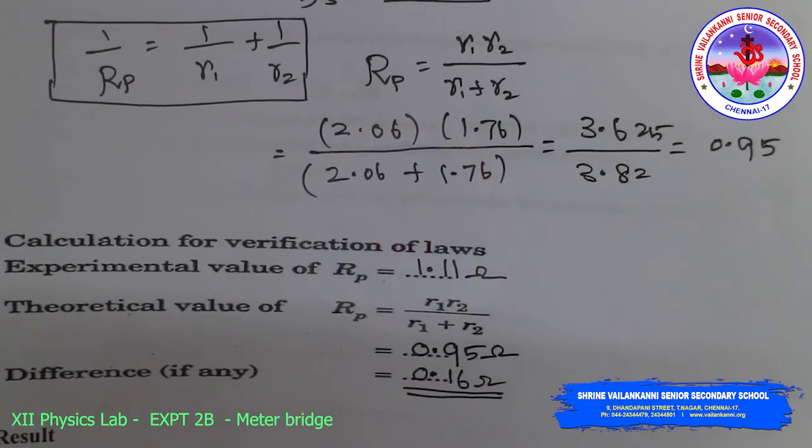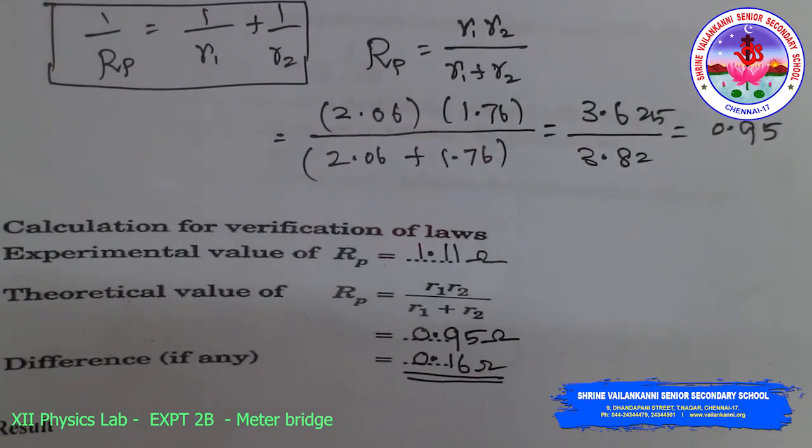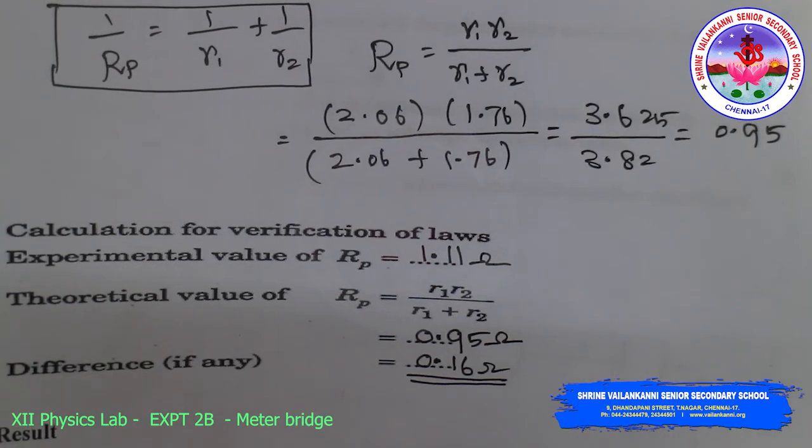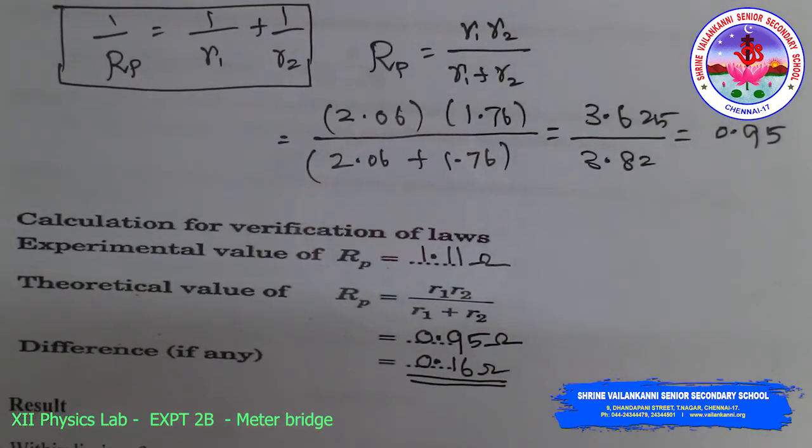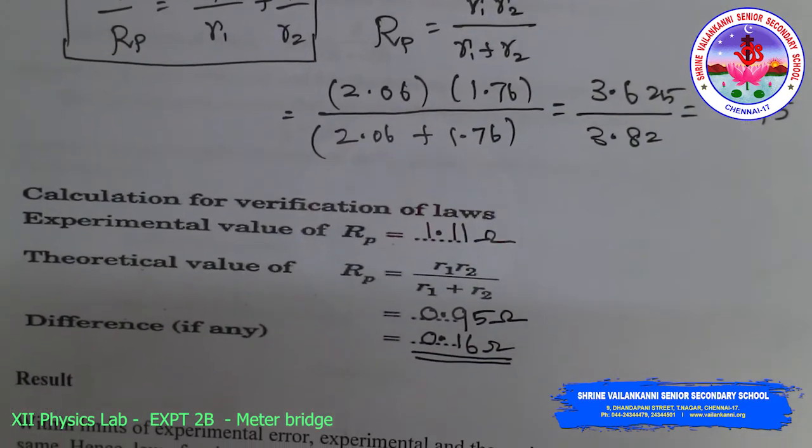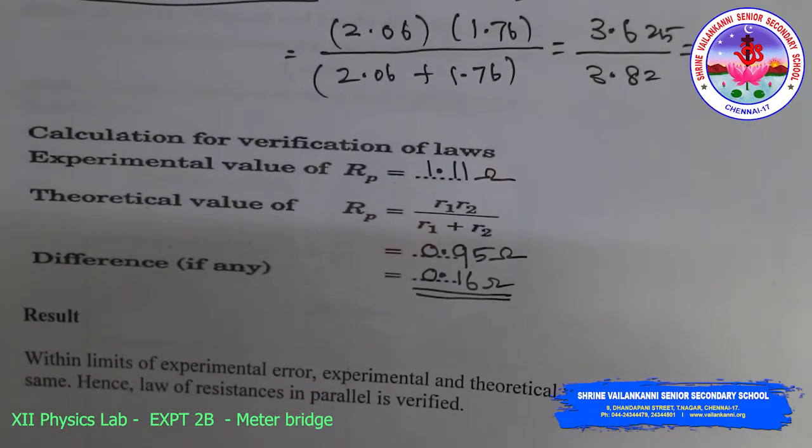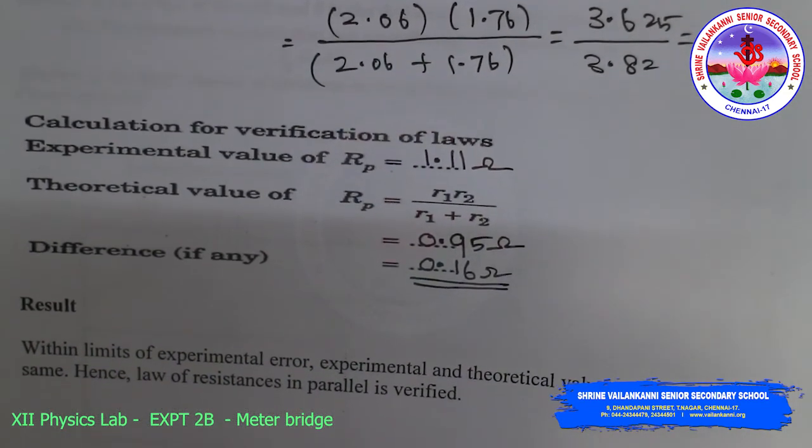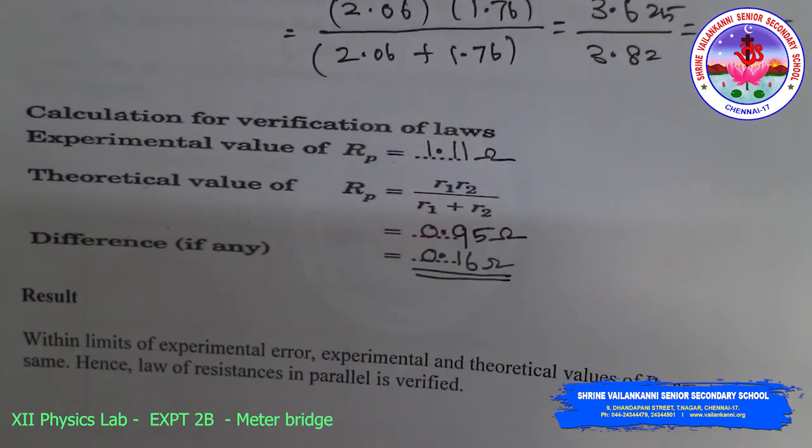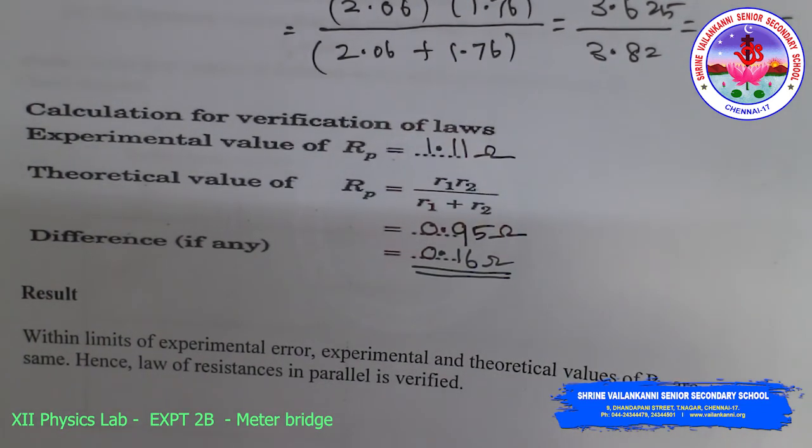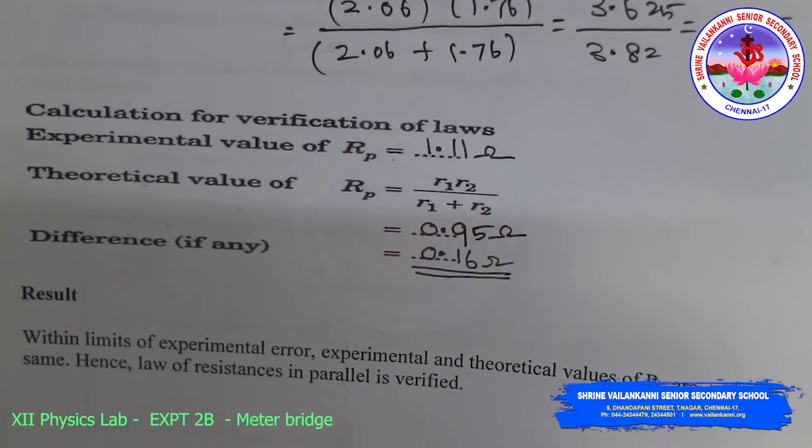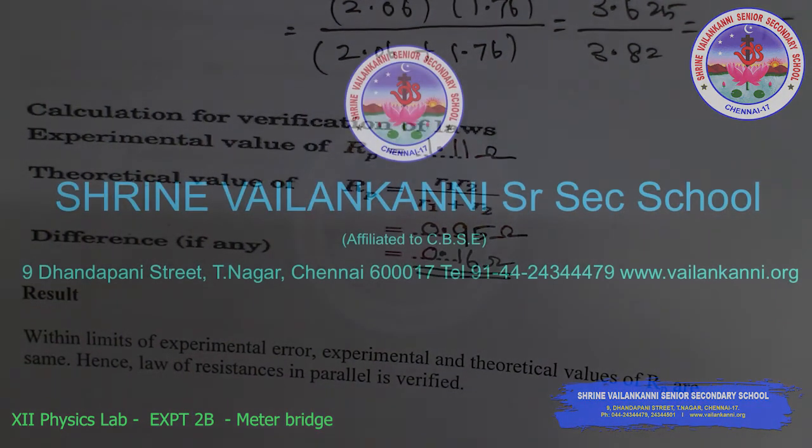The experimentally, what we got? Rp equals 1.11 ohms and theoretical value 0.95. So the difference is 0.16 only. So within the limits of experimental error, the experimental and theoretical values of Rp are the same. Hence, the law of resistance in parallel is verified.